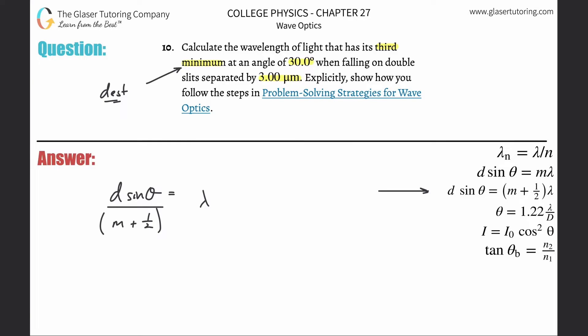The distance between the slits is three micrometers, but we need that in meters: three times ten to the minus six. Multiply by sine of 30 degrees. Divide by — m is two. The reason is that the first minimum falls at an m value of zero, as I explained in the prior problem. Then add one half.